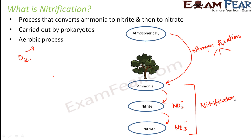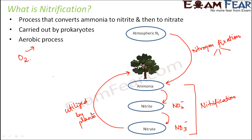Nitrification is a two-step process: in the first step ammonia gets converted to nitrite, and in the second step nitrite gets converted into nitrate. This nitrate can then be utilized by the plants because it is now in a usable form. With that, one portion of the entire nitrogen cycle is complete.